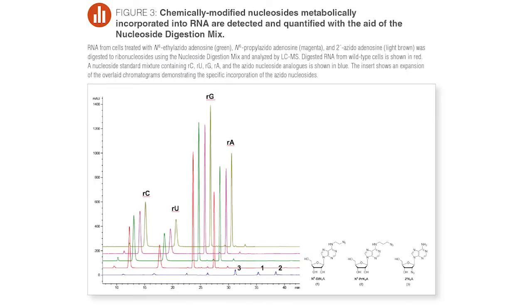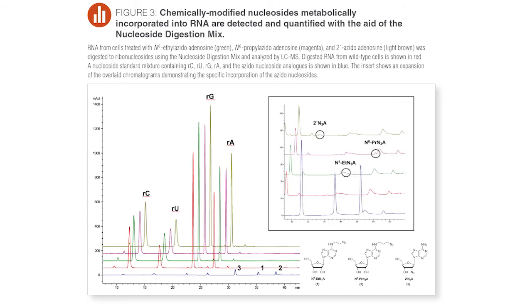Here, I would like to highlight an example where the nucleoside digestion mix was used to monitor the metabolic incorporation of azido-modified nucleosides into cellular RNA. Total RNA from cells treated with 6-ethyl-azido, 6-propyl-azido, and 2-azido-adenosine was digested to ribonucleosides using the nucleoside digestion mix and analyzed by LC-MS. The digested RNA from wild-type cells is shown in red. The insert shows an expansion of the overlaid chromatograms, demonstrating the specific detection of the chemically modified nucleosides.